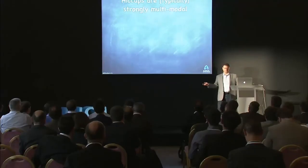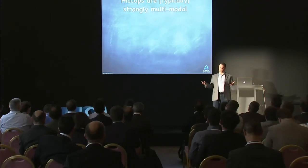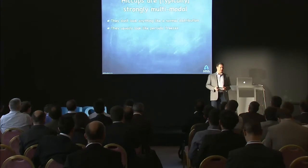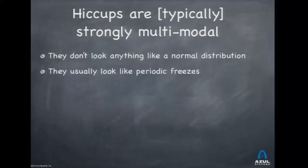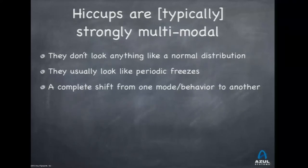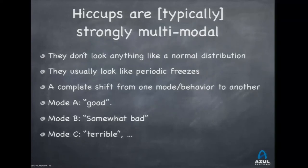These hiccups are typically strongly multimodal — anything but a standard distribution. They look like periodic freezes with really good behavior in between: good, freeze, good, freeze. The only question is how big the freeze is. There are usually multiple modes: a common good mode, a somewhat bad mode, and a terrible mode. Understanding the modes is important.